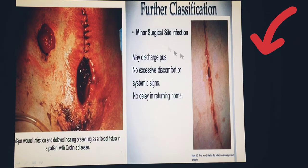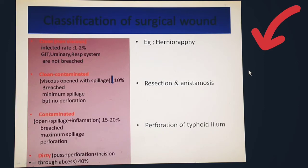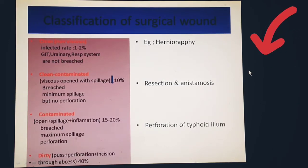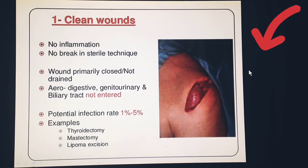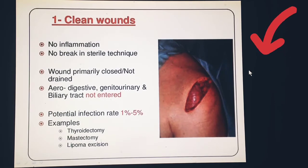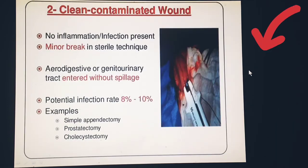Classification of surgical wounds is divided into four types: clean, clean contaminated, contaminated, and dirty. In the clean wound, the infection rate is about 1 to 2 percent. There is no inflammation, no break in sterile technique, and the wound is primarily closed and not drained. The aerodigestive, genitourinary, and biliary tracts are not entered. Examples include thyroidectomy, mastectomy, and lipoma excision.